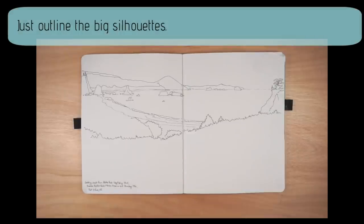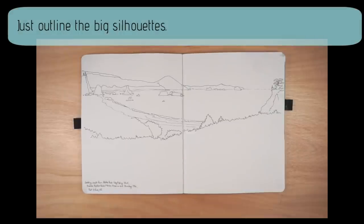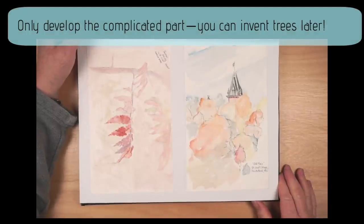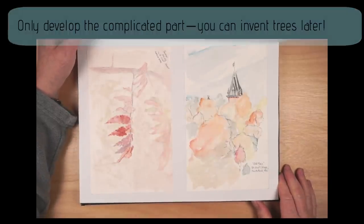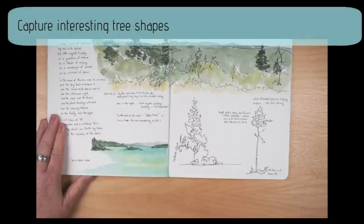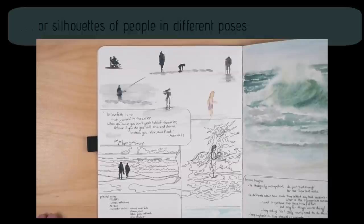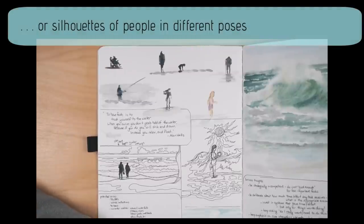You can just outline the big silhouettes, or only develop the complicated part. You can always invent trees later. Or you can capture interesting tree shapes or silhouettes of people in different poses.